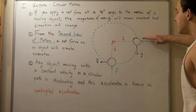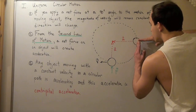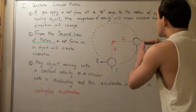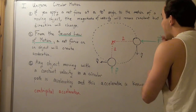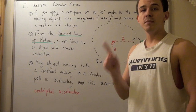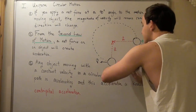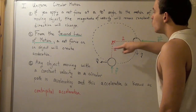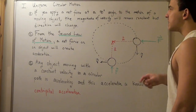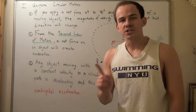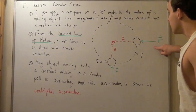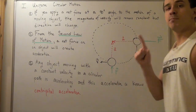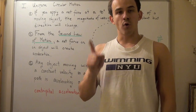Suppose I continue applying this force at a 90-degree angle to my velocity. What will happen is my object will change direction — it will change its path — but the magnitude of velocity, the speed of my object, will remain the same. If I continue adding this force at a 90-degree angle, my object will move along a circular pathway with uniform velocity. In other words, our magnitude of velocity will stay the same, but our direction of velocity will change. The acceleration vector must point in the same direction as our net force.